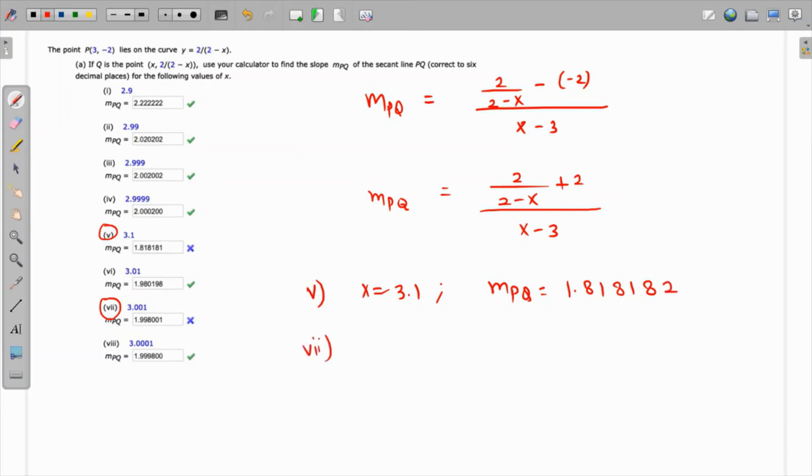Likewise for the seventh part, when x is 3.001, the slope is going to be 1.99800, and the last number when rounded off will become 2. So these are the two answers.